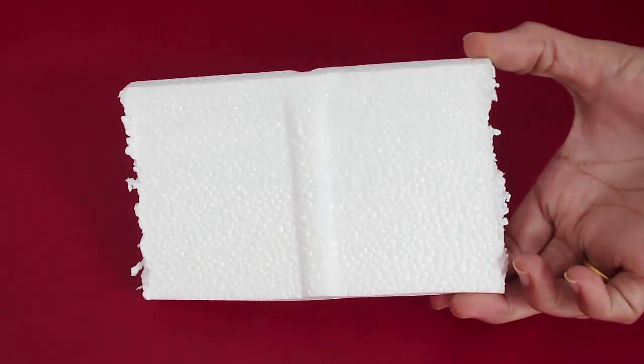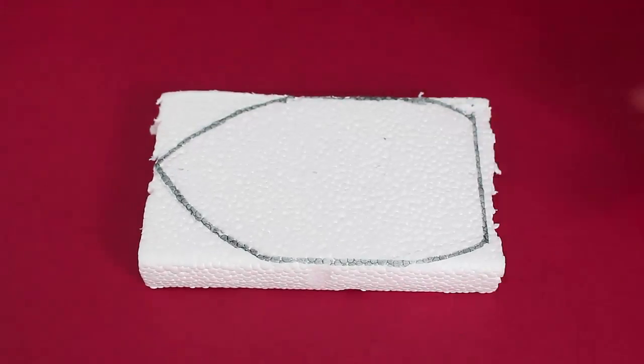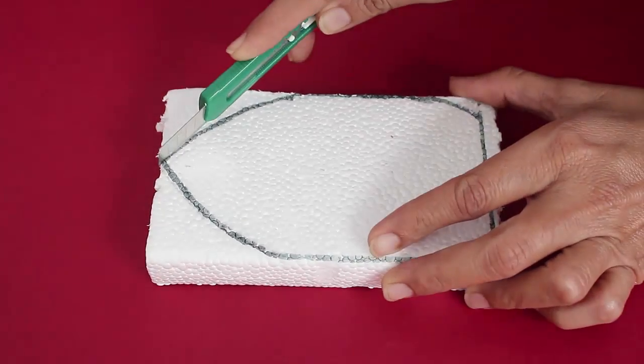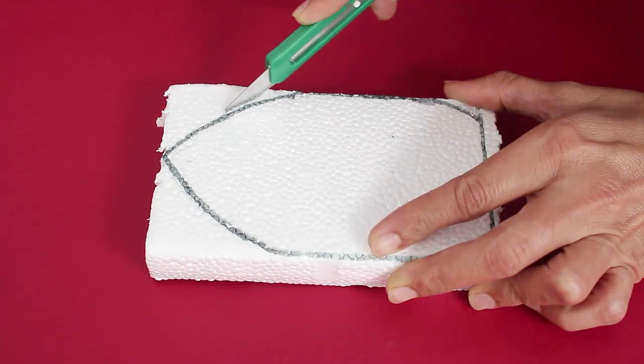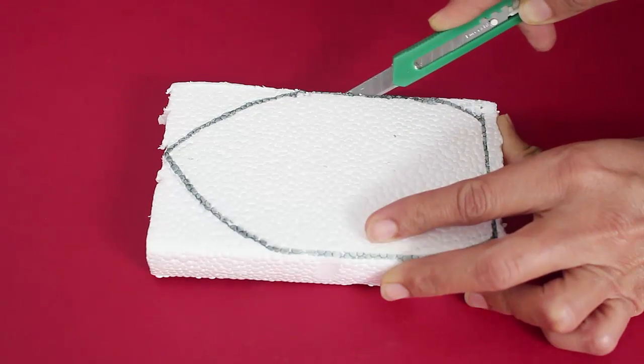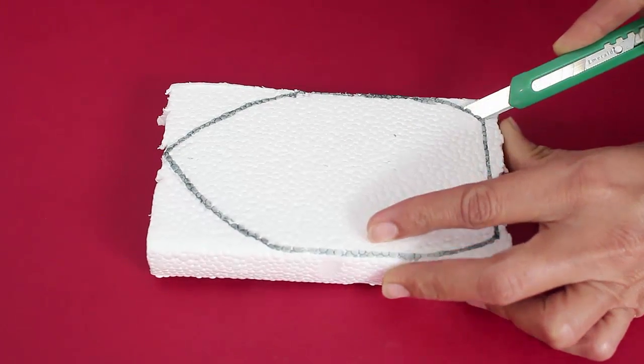Now mark out the outline of a board on a piece of styrofoam with a marker and then cut it with a penknife. This will make the floating boat.